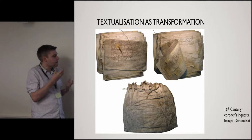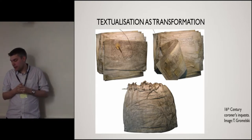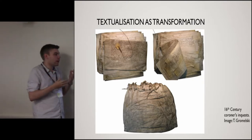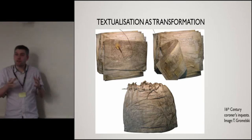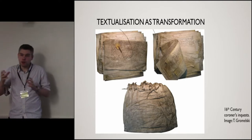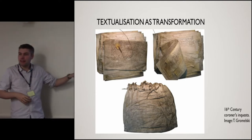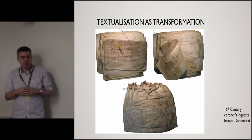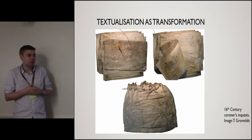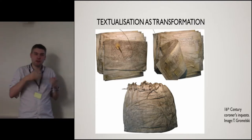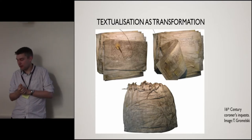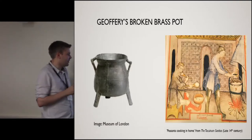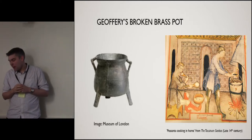We can see objects itinerating through documents, emerging in another form, and actually being transformed through this process of textualization. This is where the idea of itineraries is important: those objects preserved as material survive in material form, and that material form goes off and has all sorts of adventures in no way related to how they're represented in the text. But by being in the text as well, they stay as another kind of thing. We can think of objects as being multiple — existing outside of their material form. Let's go back to Jeffrey's broken pot — we don't have a picture, as they didn't illustrate lists of goods and chattels, but it probably looked something like this.